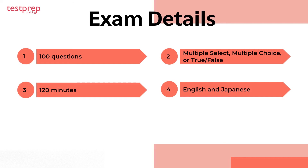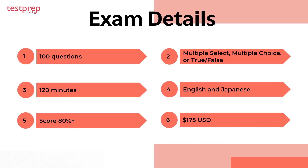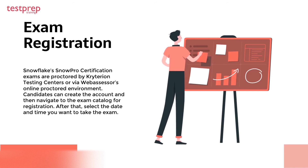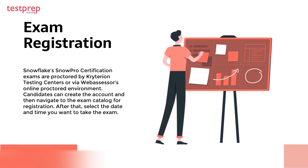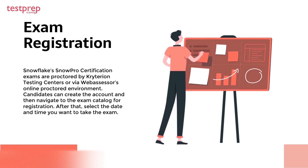To pass the exam, candidates have to score 80 percent or more, and the Snow Pro Core exam fee is 175 US dollars. Snowflake's Snow Pro certification exams are proctored by Criterion testing centers or via Web Assessor's online proctored environment. Candidates can create an account and then navigate to the exam catalog for registration, then select the date and time they want to take the exam.